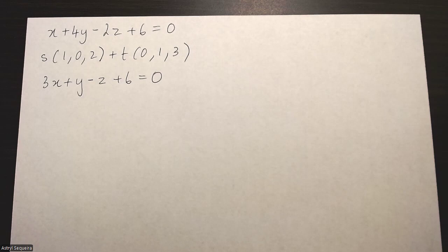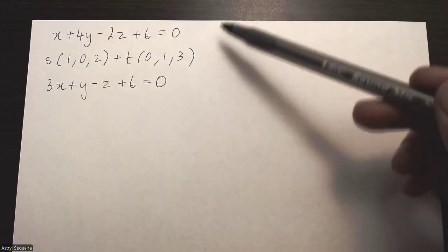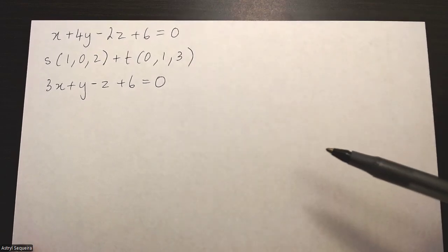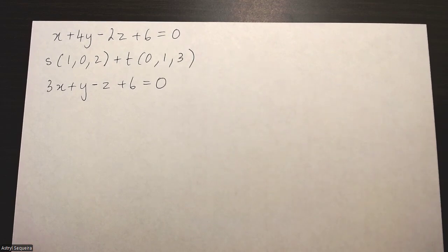Alright, in this video we want to find the intersection of the three planes given over here. The first one and the third one are given in Cartesian form, but the second one is given in vector form.